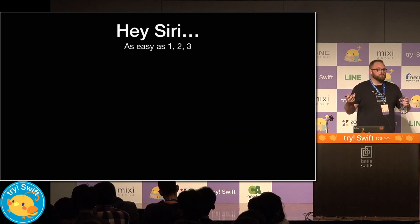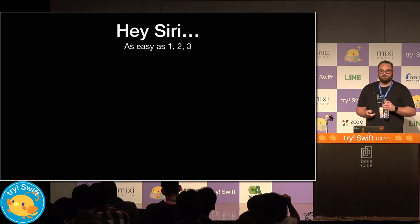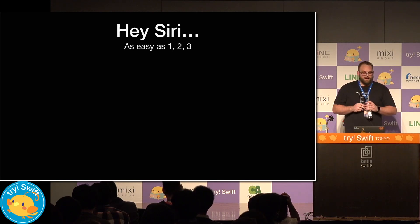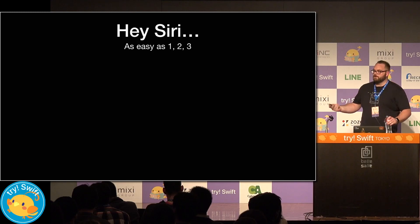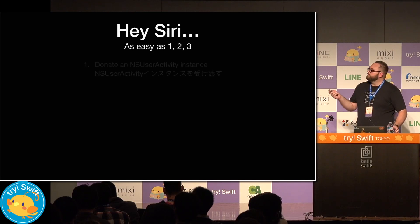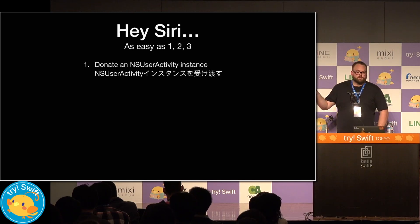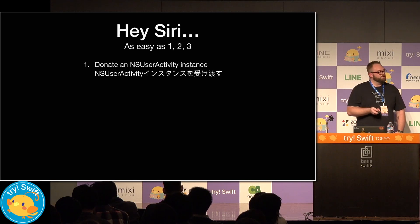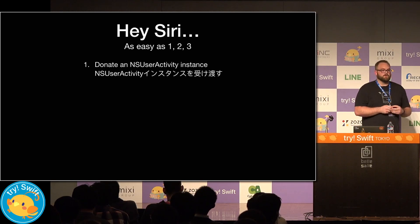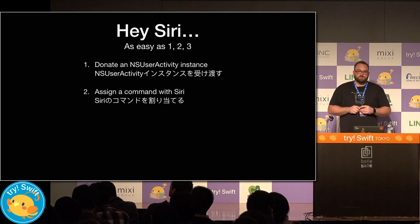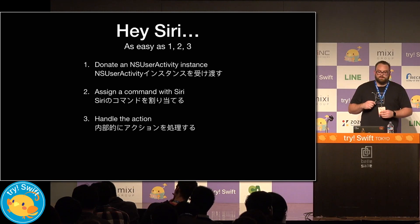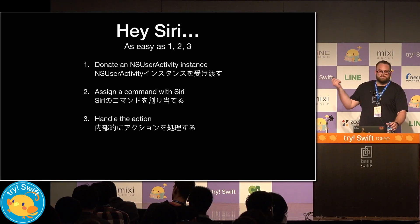We're all familiar with the phrase 'Hey Siri' — I probably just activated a number of your phones. But it really is quite easy. A lot of people seem to think that implementing Siri Shortcuts is this long convoluted process, and it's quite simple. It is as easy as one, two, three. Step one: we activate or donate an NSUserActivity instance. Step two: we assign the voice command with Siri. And then step three: we simply handle the action.